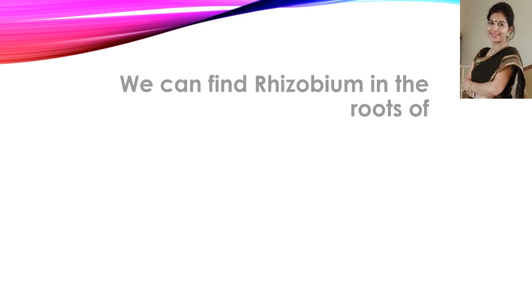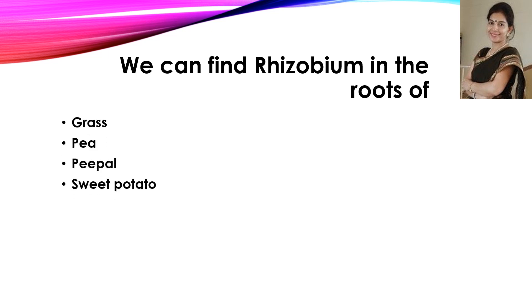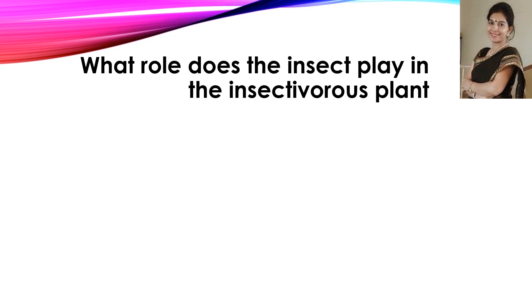Now the next question: we can find rhizobium in the roots of — you have to name the plant out of these four options. The correct answer is the pea plant.